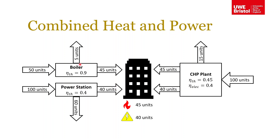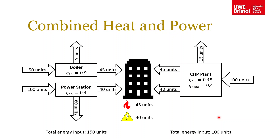Comparing the conventional system to the CHP plant: for the conventional system we're inputting 150 units of energy to get a total of 85 units supplied to the building, whereas with the CHP plant we're only putting in 100 units. The combined heat and power plant is therefore more efficient than getting heat and power from separate sources — that's the important point to consider here.